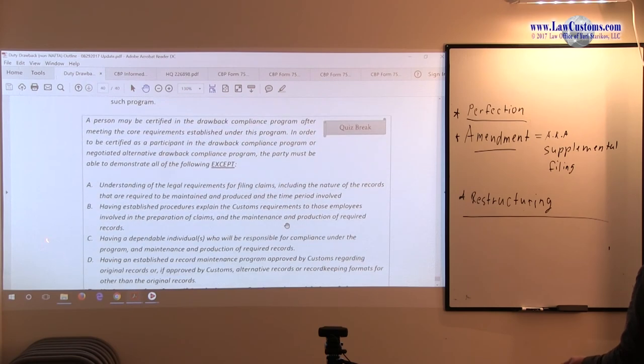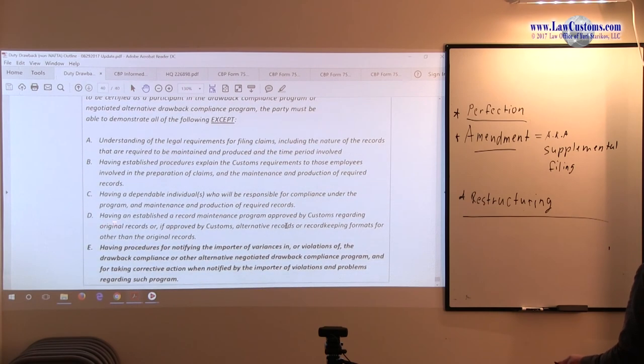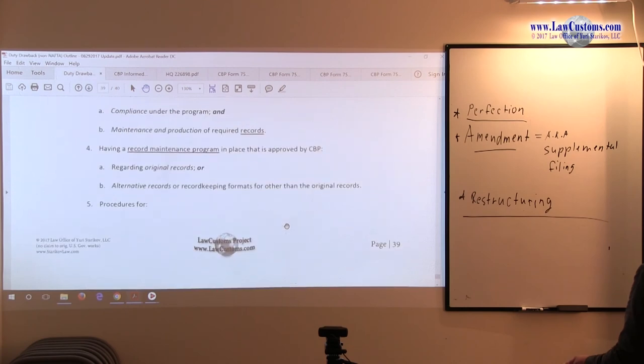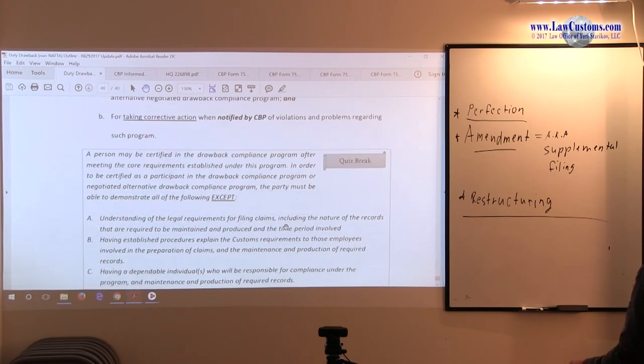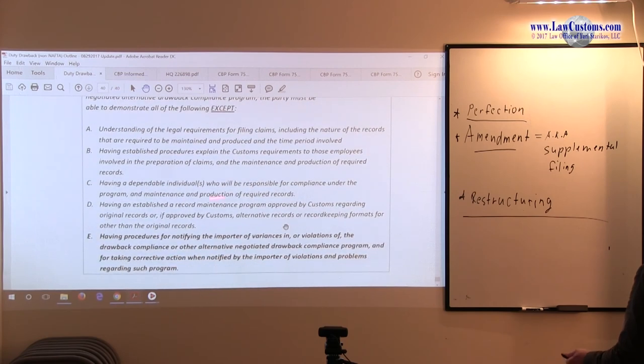D. Having a record maintenance program approved by CBP. Is that on the list? Is that on the list? Record maintenance program is number four on the list. So, D is alright.